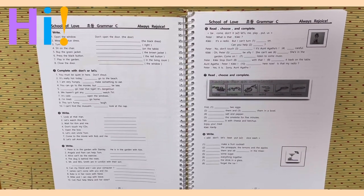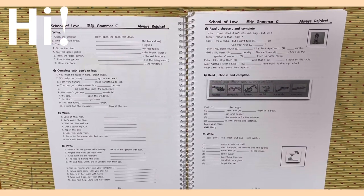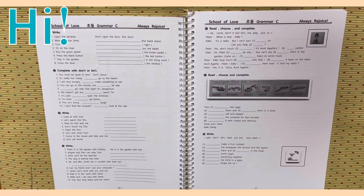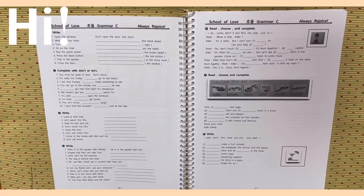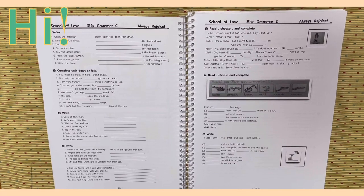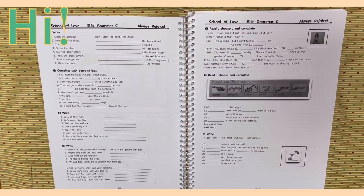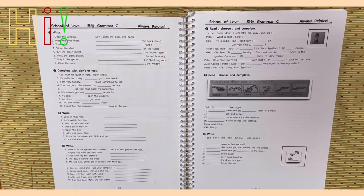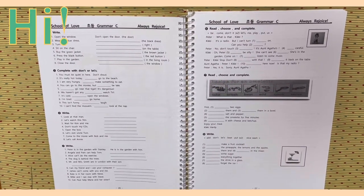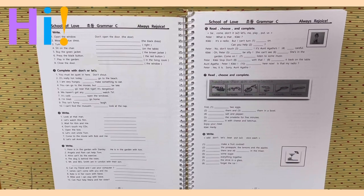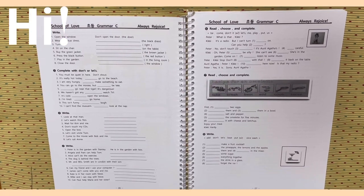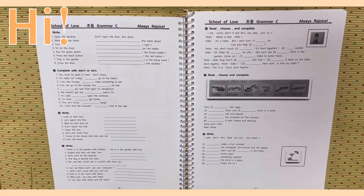Activity 5. Write. Number 1. Peter is in the garden with Stanley. 자, 맞는 목적격 대명사를 사용합니다. He is in the garden with Stanley 대신에 him. Number 2, Angela and Pam can help Tom. Alice can do the exercise. The dog is behind the trees. Mr. and Mrs. Smith are in London with their son. 6, can my friend and I use your computer? 7, James can come with you and me. 8, Kate is in her room with Steve. Mike and I can stay with Steve. Can Paul help Maria and her sister?